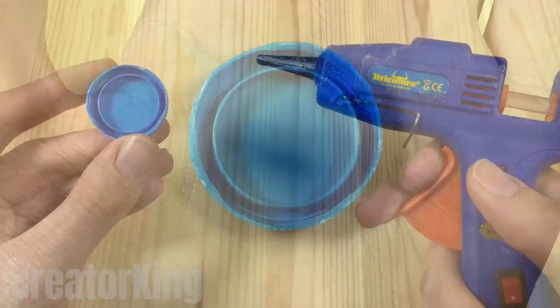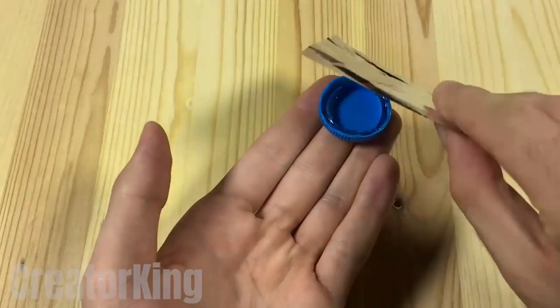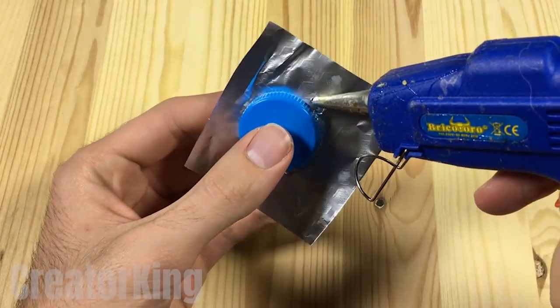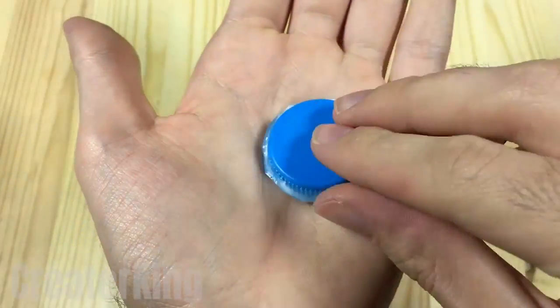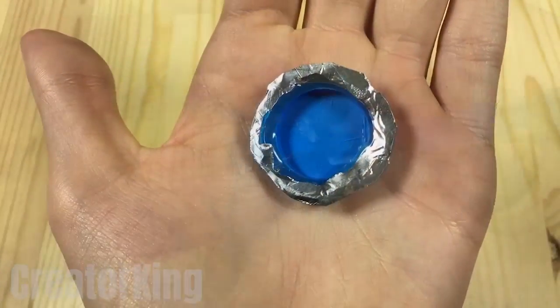After cutting off the sharp edge of the lid proceed to fill this slot with hot glue. Kindly ask your mom to lend you some of her precious aluminum foil and cut a small square which we will put on top of the lid. After securing it to the lid with more hot glue cut off the excess with scissors. Now with the box cutter remove the center part of the aluminum.